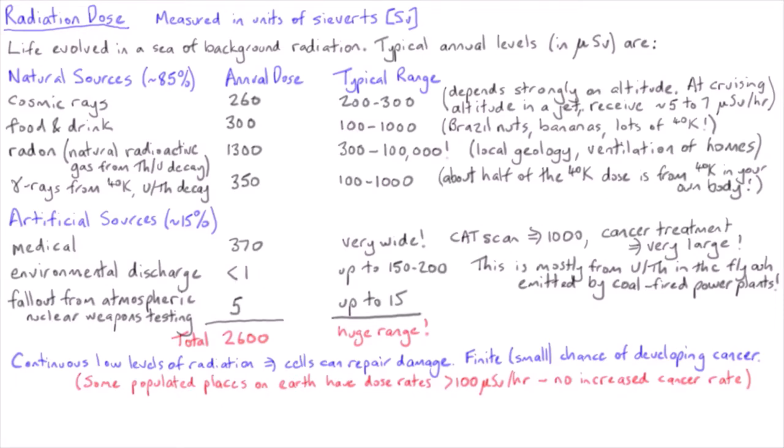So far we have talked about chronic radiation exposure. Chronic is a medical term referring to consistent low levels of exposure.